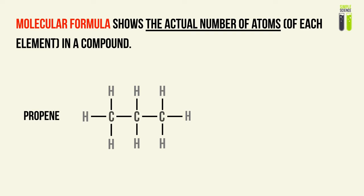Molecular formula shows the actual number of atoms in each element. It is basically the formula of the substance that you see in common chemistry, like water — it would be H2O, or carbon dioxide would be CO2. So that's the molecular formula; it shows the actual number of atoms that make up that molecule.